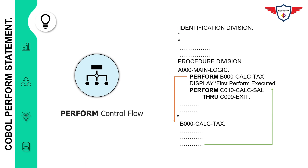Now let's look at the basic variant of the COBOL perform statement and how control flows. Here is a sample COBOL program calculating tax on employee salary. In the procedure division, paragraph A000-MAIN-LOGIC uses a basic perform statement and a perform with THROUGH option. When the first perform executes, control goes to paragraph B000-CALC-TAX, executes all statements there, then returns to A000-MAIN-LOGIC and continues from the next statement, which is a DISPLAY statement.